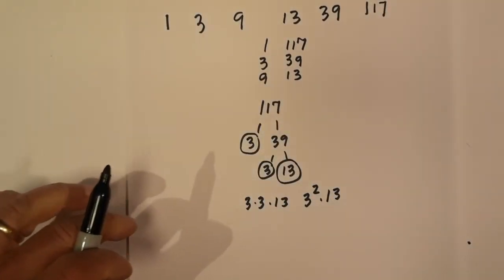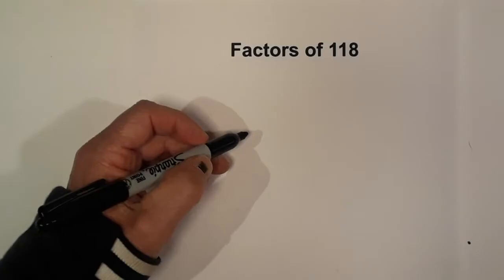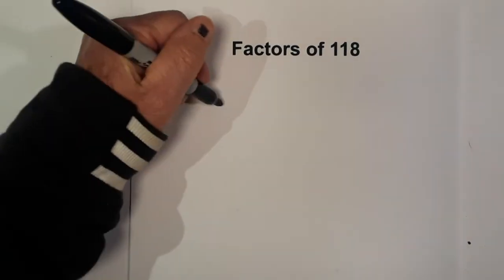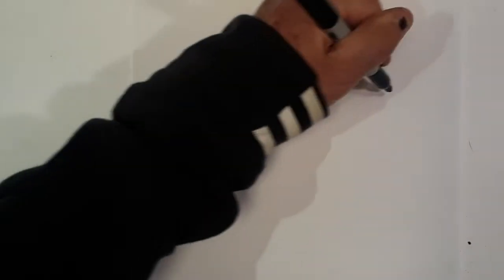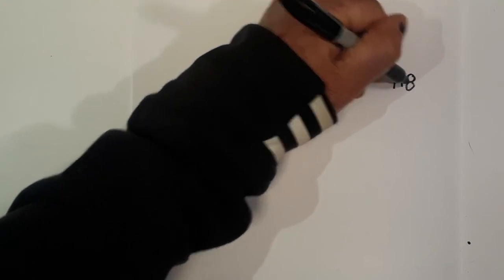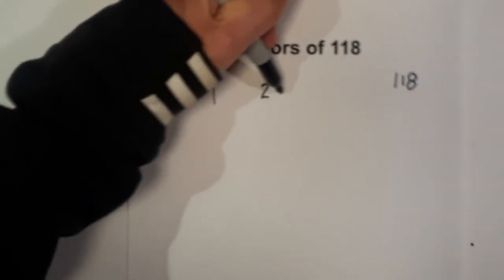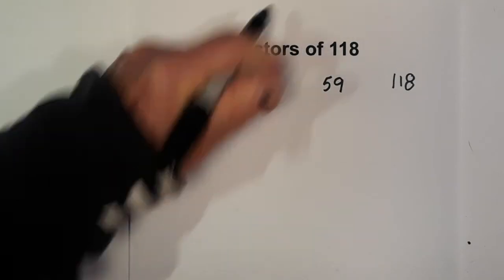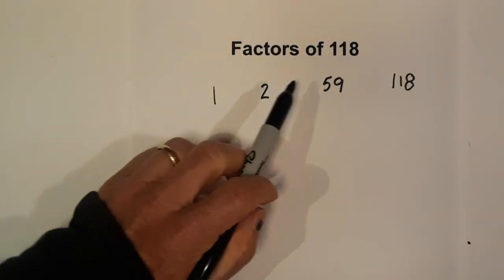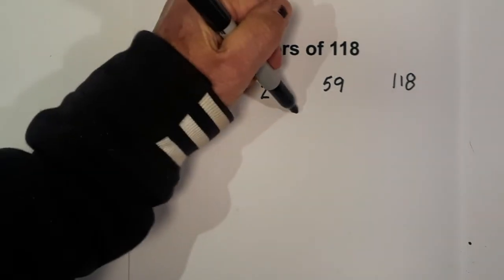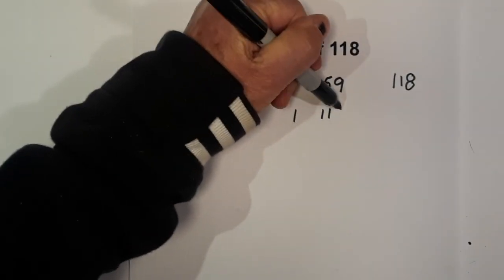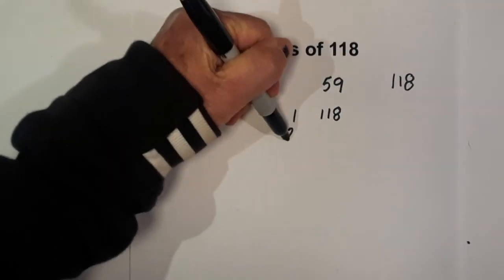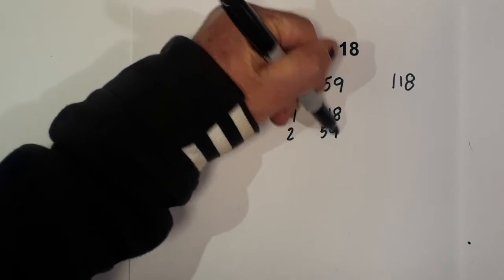Now let's take a look at 118. For 118, let's begin with 1 times 118, and then 2 times 59. So the factors of 118 are 1, 2, 59, and 118. In pairs, they are 1 times 118 and 2 times 59.